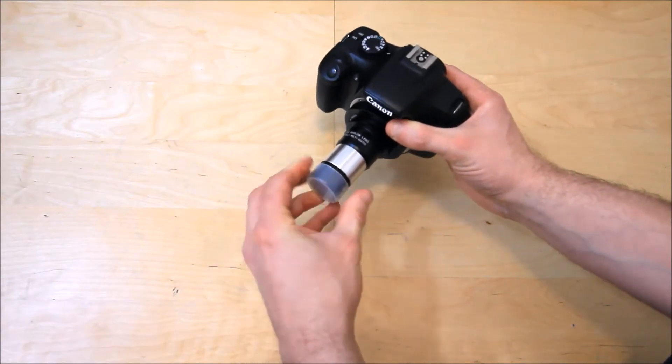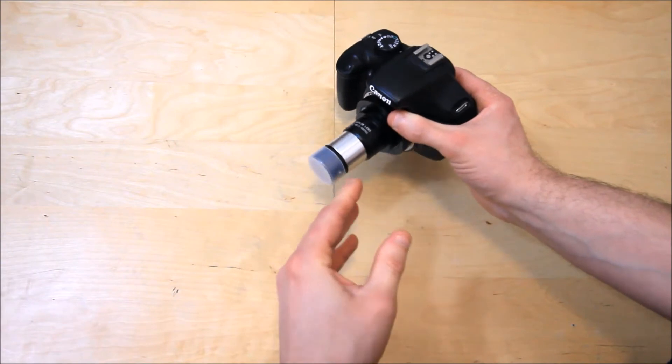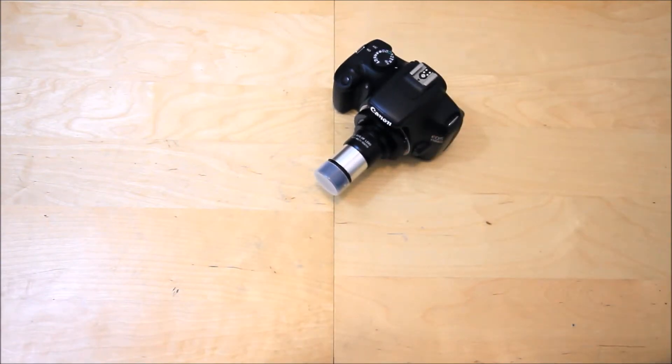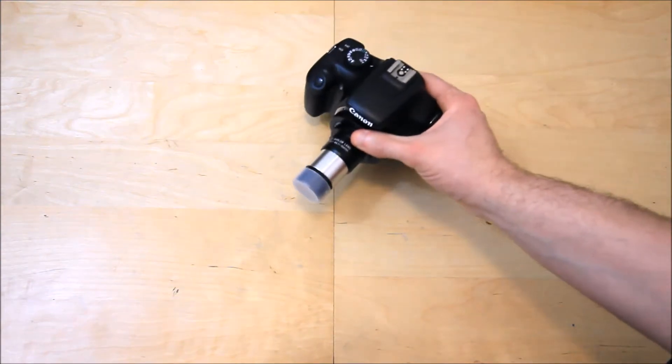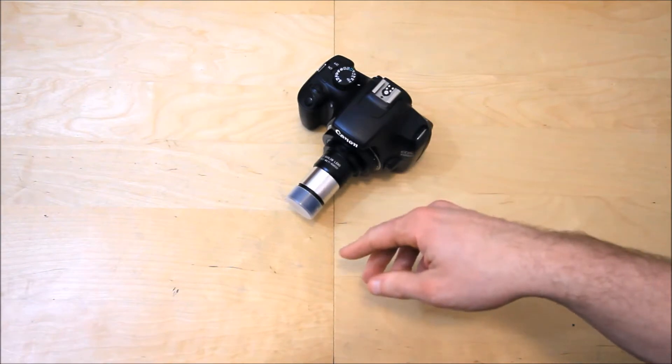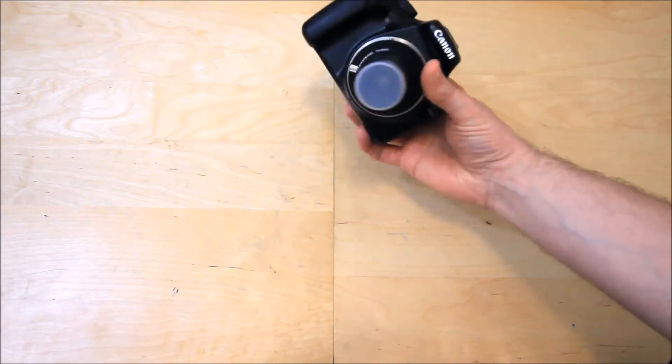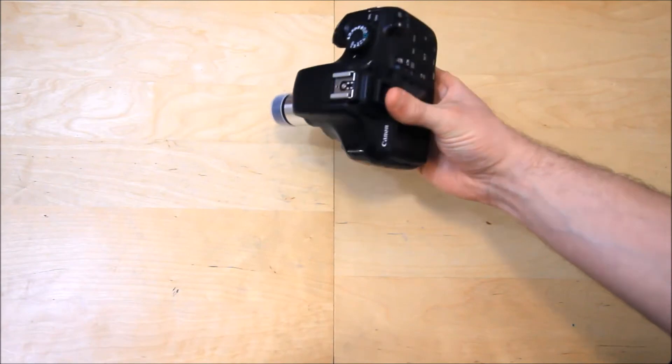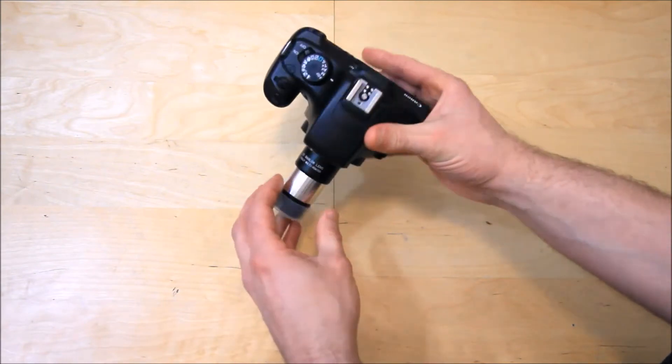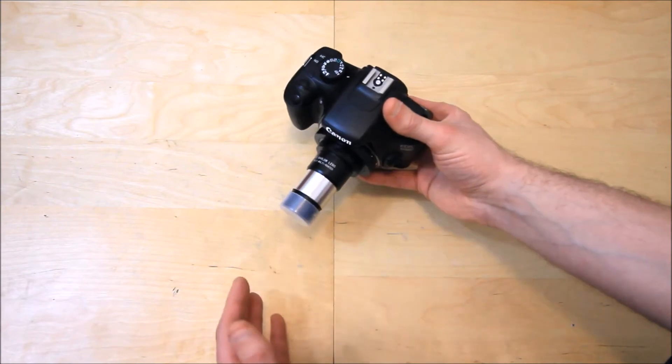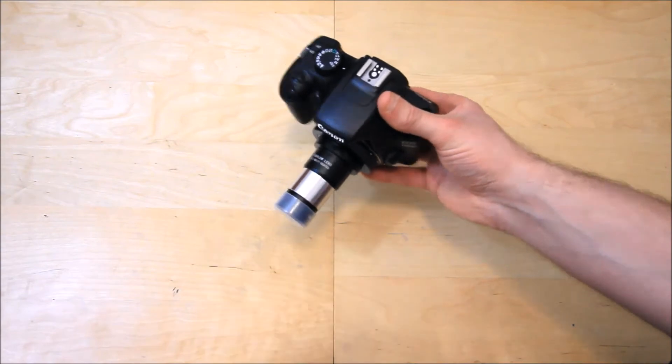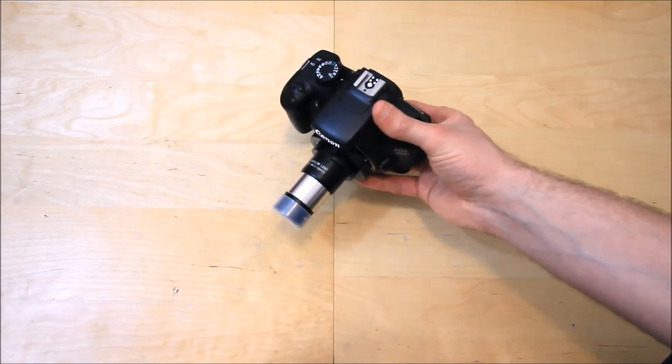Just bear in mind when you use this kind of Barlow lens, when you're doubling up the power of the telescope, you need to make sure that your ISO settings are increased or your exposure times are increased slightly. You will lose a little bit of light through this Barlow lens, particularly when you're using high powers on a telescope.